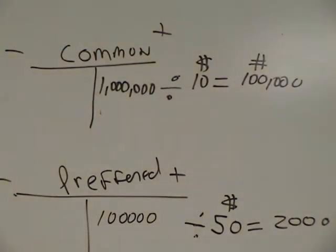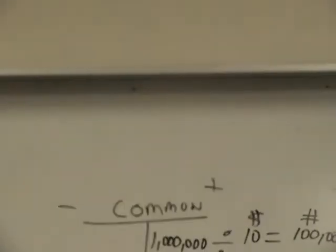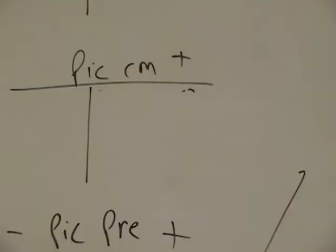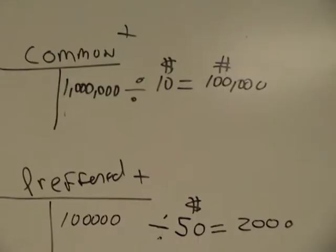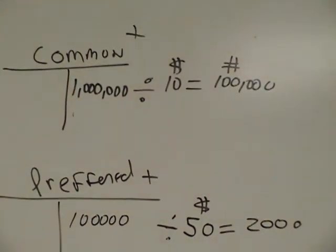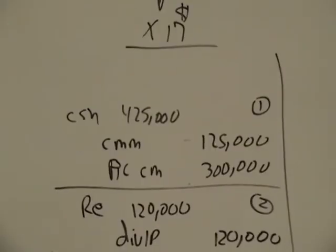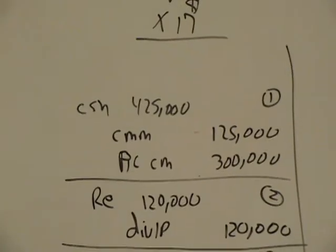Okay, we're doing E-14-2 now. So again, the thing here is to put the T accounts up. Then what? At December 31st, the company declared the following cash dividends.